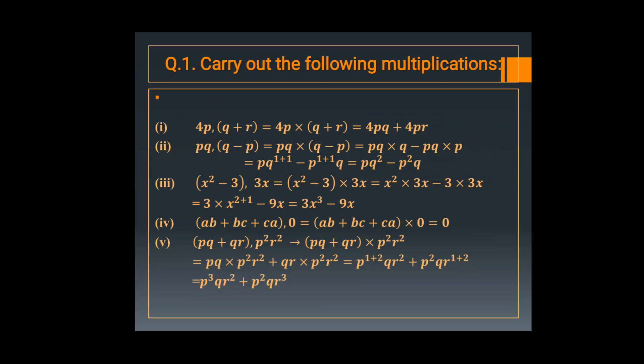In the second question, PQ multiplied by Q minus P. Here also PQ multiplied by Q, and then PQ multiplied by P. So you will add the power of the same base. In the first term, you will add the power of Q: 1 plus 1. In the second term, you will add the power of P: 1 plus 1, that is 2. So it is PQ square minus P square Q.